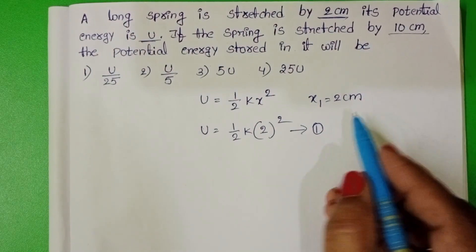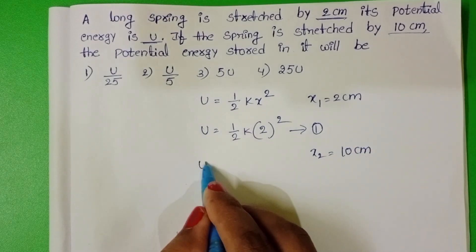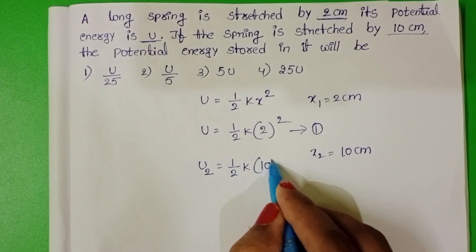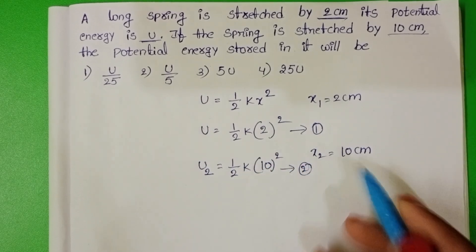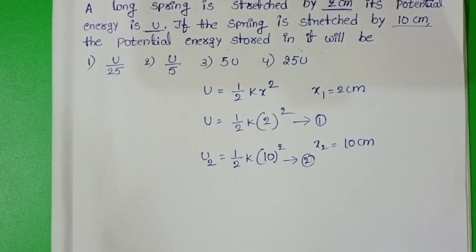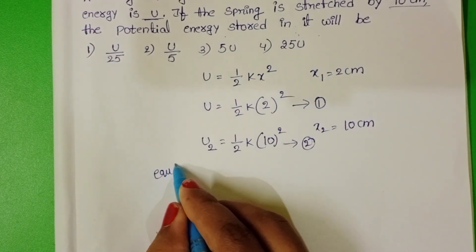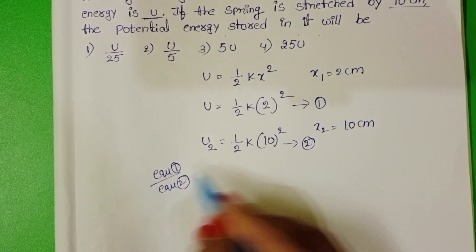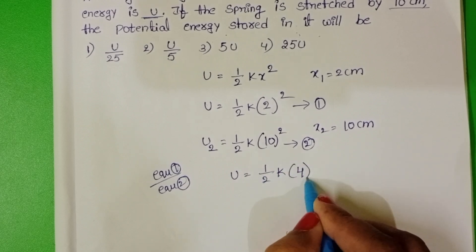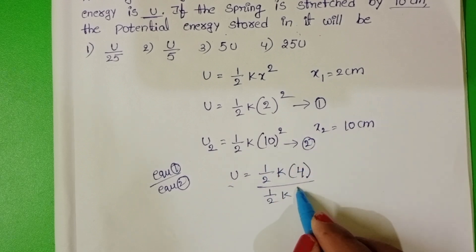After that, the spring is stretched by 10 cm. Now let the potential energy be U2. U2 equals half k into 10 whole squared. Take this as equation 2. We have to find the potential energy when the spring is stretched by 10 cm. Dividing equation 1 by equation 2: U over U2 equals half k into 2 squared (which is 4) over half k into 10 squared (which is 100).